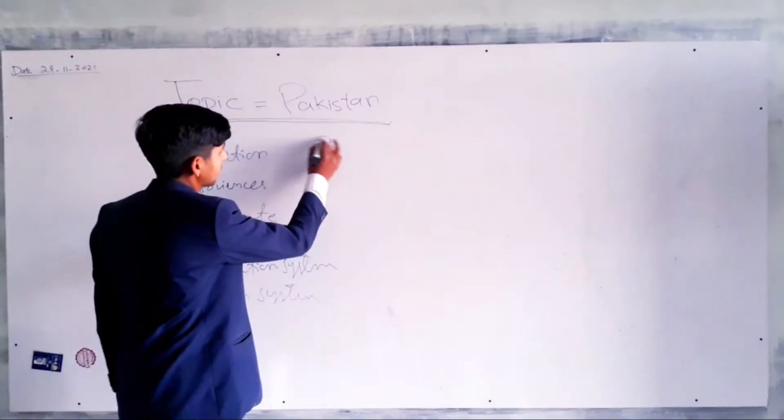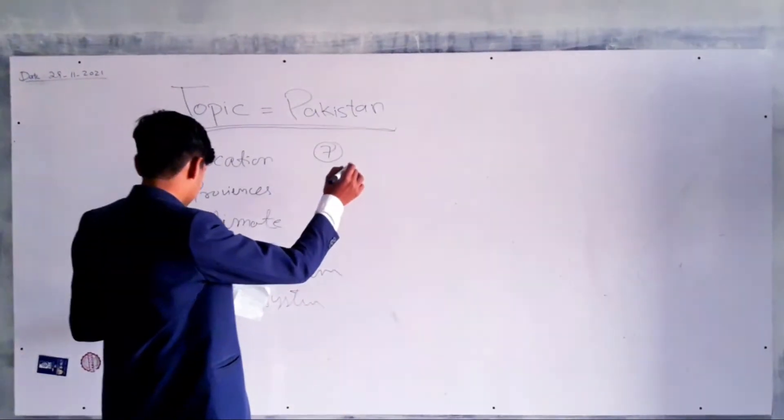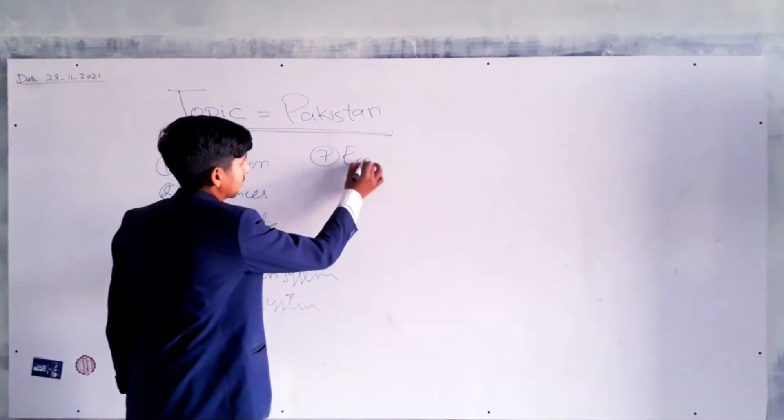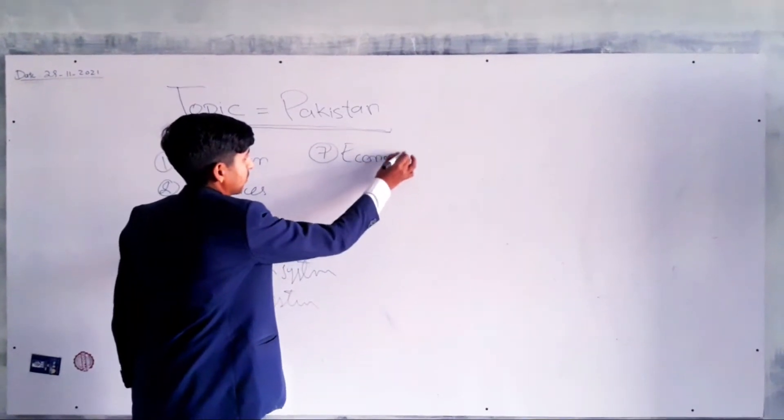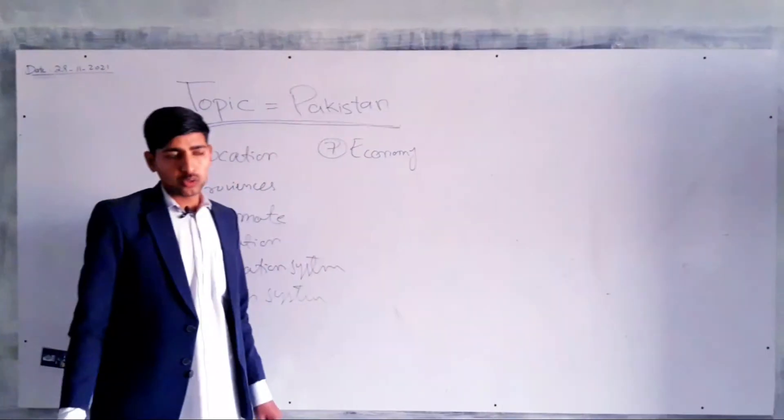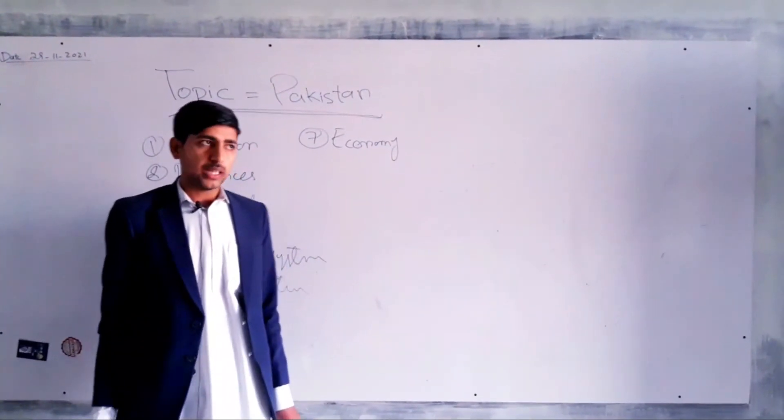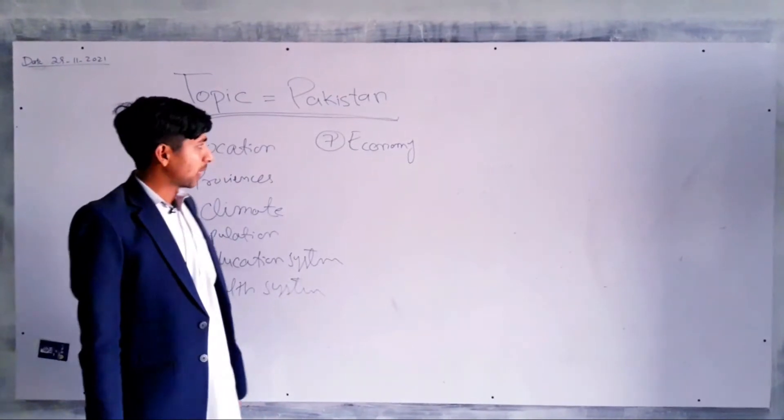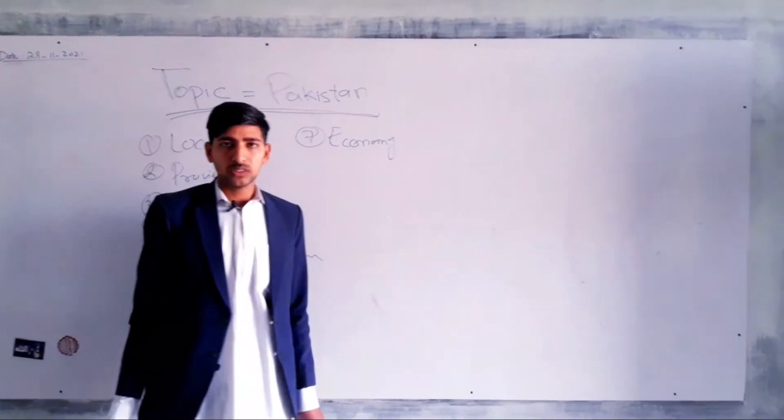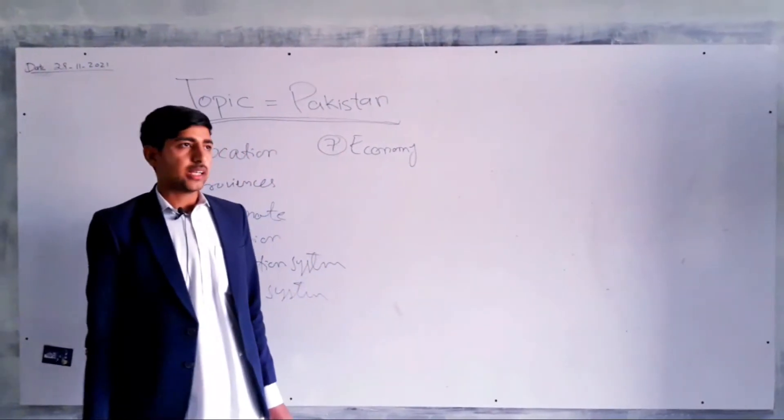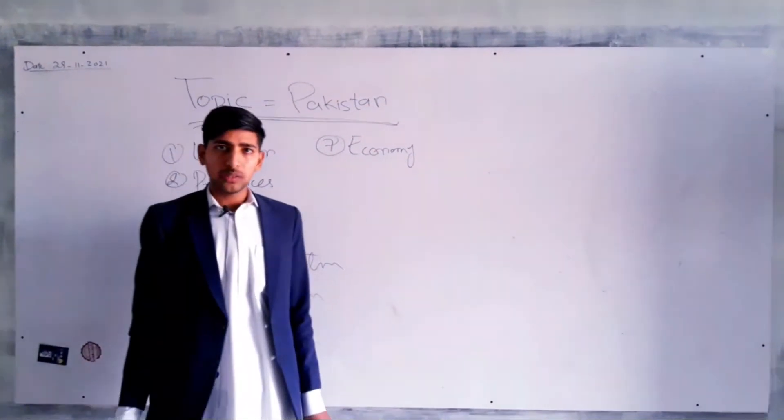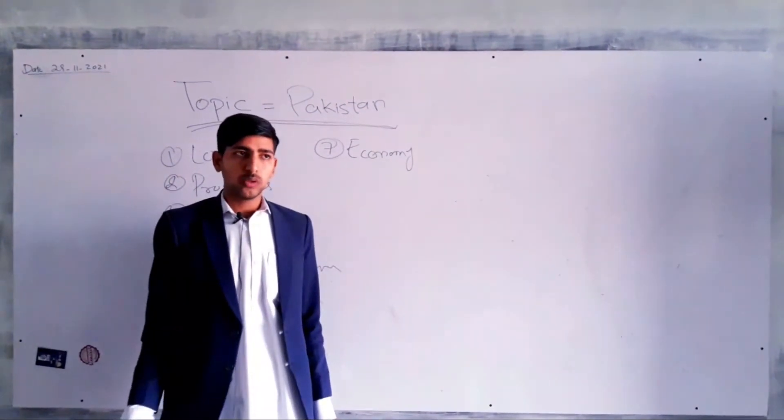Number seven is the economy of Pakistan. Pakistan is a developing country with a semi-industrial economy. GDP per capita ranks 181st. Pakistan exports leather, textiles, cotton, fruits, and vegetables, and imports petroleum, gas, electric equipment, iron, and steel.